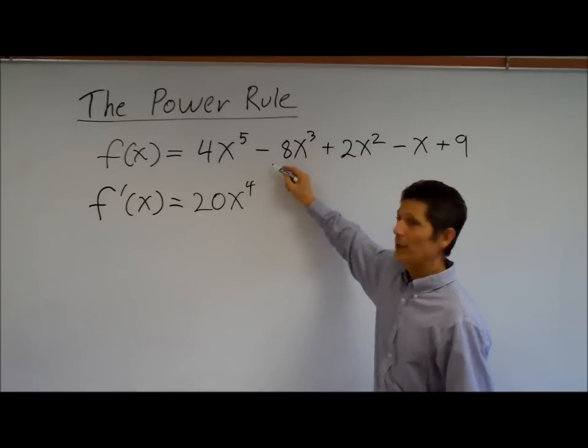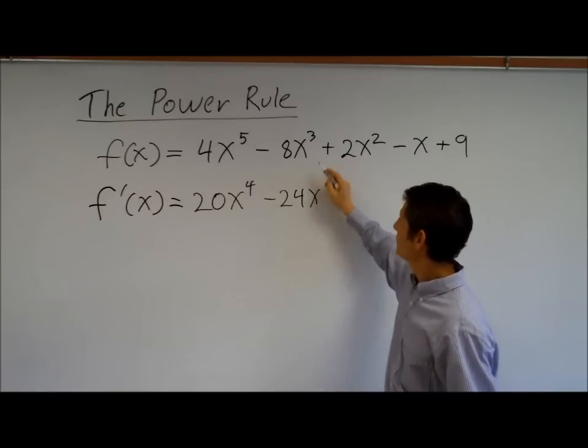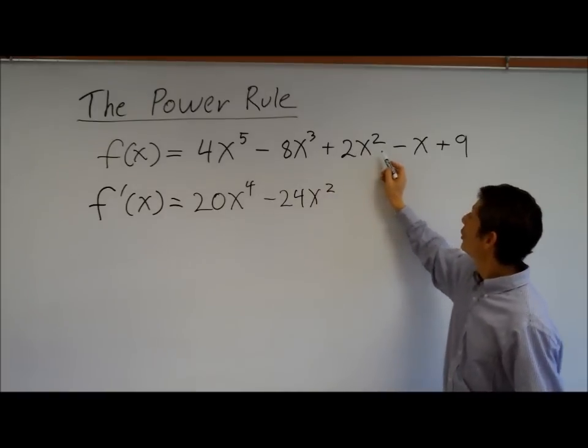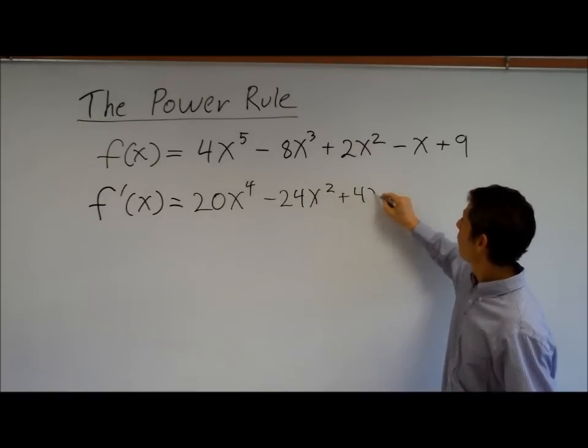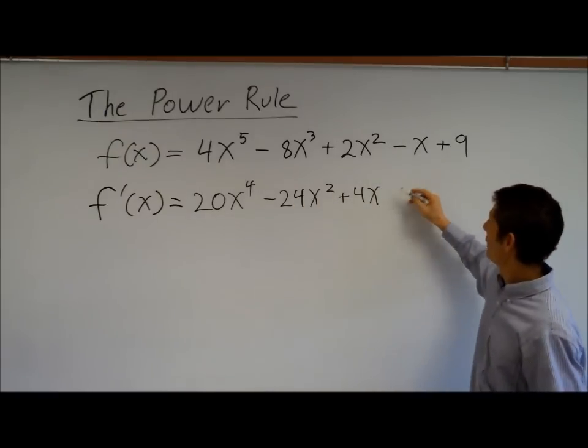Should we do the next one? Let's do it. 3 times negative 8, negative 24, x, subtract 1, squared, 2 times 2, 4x to the 1. I'm not going to write it. You know that there was a 1 there, actually.